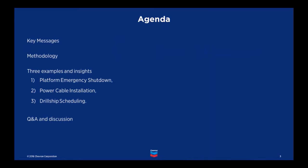Today's agenda: I'll start with some key messages, then describe the methodology — why I think simple decision trees are such an effective way to build organizational decision quality. I'll then demonstrate the effectiveness of the trees through three examples and share some insights. The three examples are emergency shutdown of a platform, installing a power cable, and scheduling drill ships. Although these are all oil and gas focused, I'll keep them at a pretty high level and provide some background so everybody will be able to see the types of insights I'm describing.